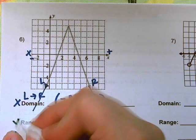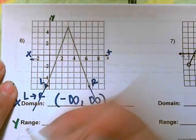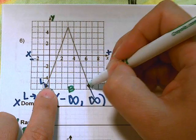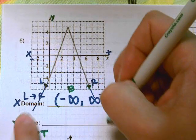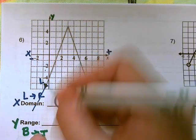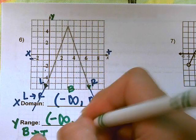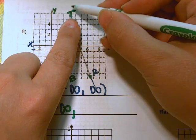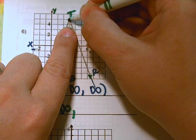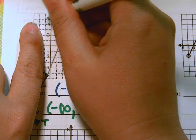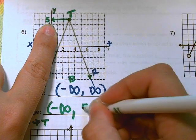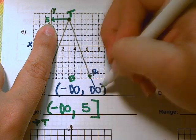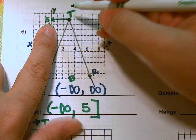The range is all the y-values. The y-axis goes up and down, so the range is always from the bottom to the top. At the bottom, arrows show the graph keeps going — negative infinity. At the top, the graph stops at the highest point, which has a y-value of 5. We use a bracket because it's solid and includes that 5.